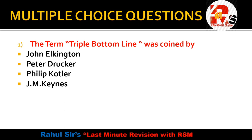Question number 1: The term 'triple bottom line' was coined by — this is a question about authors, so you need to remember this. The options are: John Elkington, Peter Drucker, Philip Kotler, or J.M. Keynes. The triple bottom line concept was given by John Elkington, so John Elkington is the right answer for question number 1.